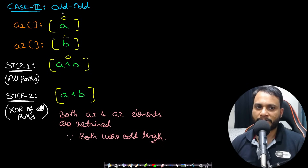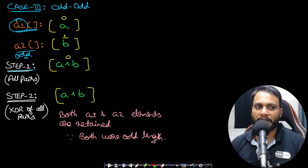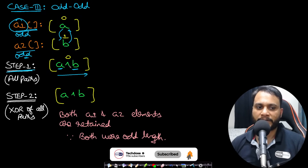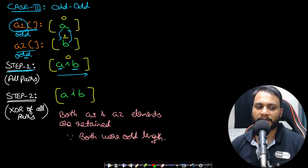Now the odd-odd case: A1 has one item and A2 has one item. Since A2 is odd length, the element of A1 appears an odd number of times (once). Since A1 is odd length, the element of A2 also appears an odd number of times (once). So in step 1 all items appear in odd count, and when you XOR all pairs in step 2, every item is retained. The result is A XOR B — both A1 and A2 elements are kept.